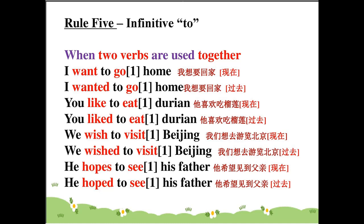After 'to,' always use the base form of the verb. For example: we wish to visit Beijing — that's the present; for past, we wished to visit Beijing. He hopes to see his father.